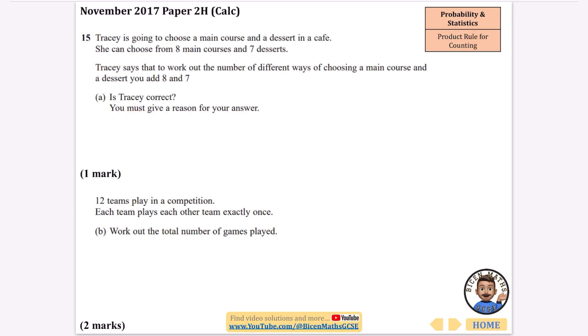Well, it's called the product rule so you're not adding these things together, you should be multiplying. So we're going to say no, you multiply eight by seven, not add.